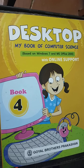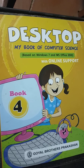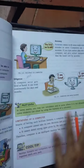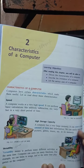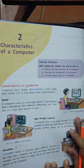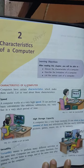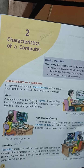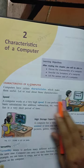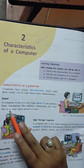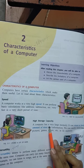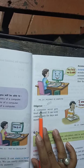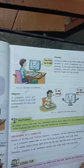Good morning to all class 4 students. First, take out your computer book and come to page number 12, which is chapter 2: Characteristics of a Computer. I remind you that in your previous class we already discussed the characteristics of a computer: speed, high storage capacity, versatility, accuracy, and diligence.